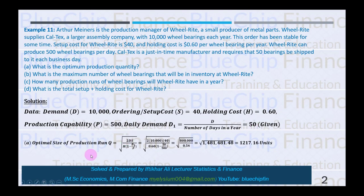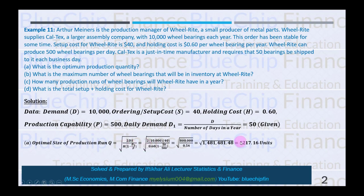The first step is to calculate the economic order quantity or optimal size of production run Q, using the formula: Q = √(2DS / H × 1/(1 − d₁/P)). Substituting D = 10,000, S = 40, H = 0.60, d₁ = 50, and P = 500, the optimal size of the production run Q is 1,217.16 units.